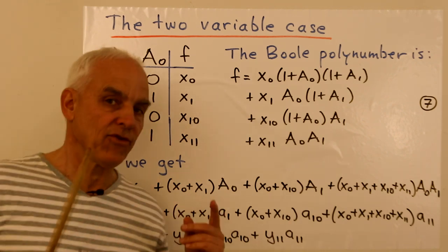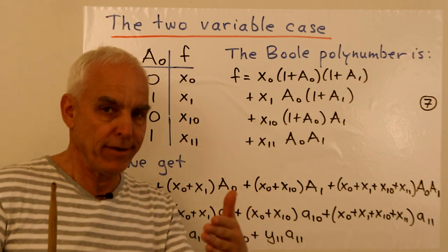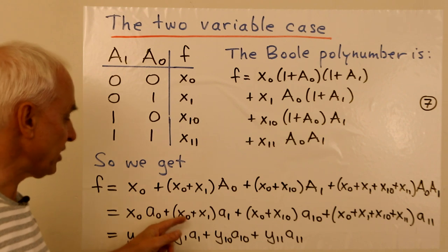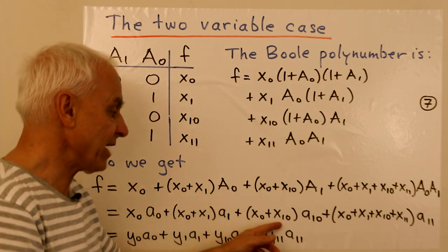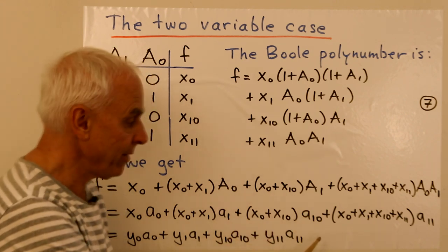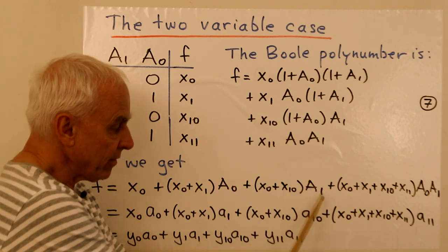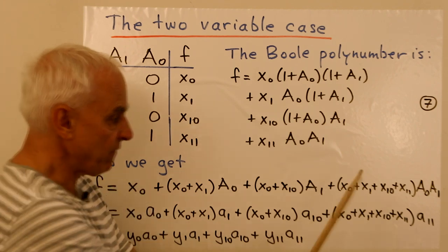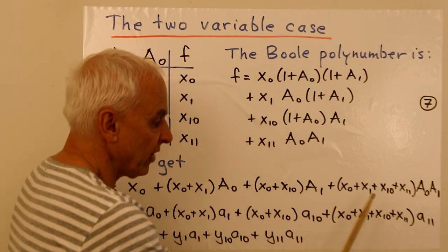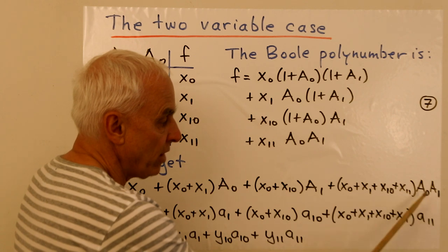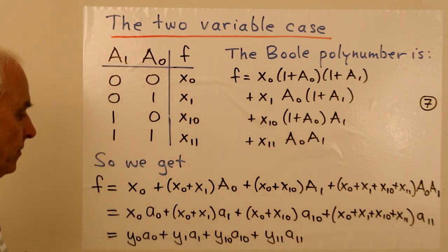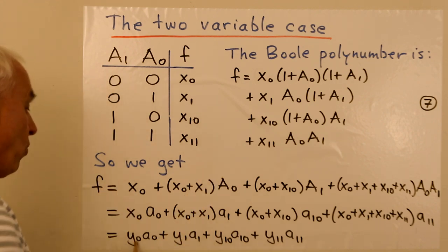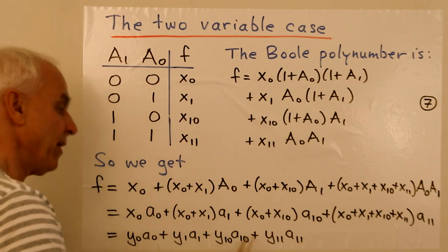And now we can rewrite this in terms of the little a's, which are now our preferred labeling for the various terms here. So it's x0 times a0, (x0 + x1) times a1, (x0 + x2) times a2—this is a2 because this term here as a subset of A0, A1 does not contain A0, but does contain A1. And finally, a11 times all of these: x0 + x1 + x2 + x3. And the a11 is standing for A0 A1. So this is then a combination of a0, a1, a2, a3 with coefficients y0, y1, y2, and y3.